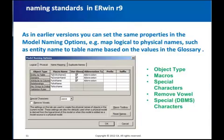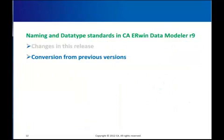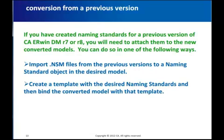Once again, you have the same functionality as before. Selecting Model Naming Options under Actions will take you to these options, where you can set the familiar settings of macros, special characters, remove vowels, and suffix and prefix options as before. Now that you know the change, let us look at how it impacts conversion of models from an earlier version. Since naming standards are now part of a model, this change will have some impact during converting or upgrading models from older versions. NSM and DSM files will now need to be brought in or linked as naming standards objects in the models. You can do so in a couple of ways — one is to create a naming standards option in a new model and import the NSM file from the earlier version.